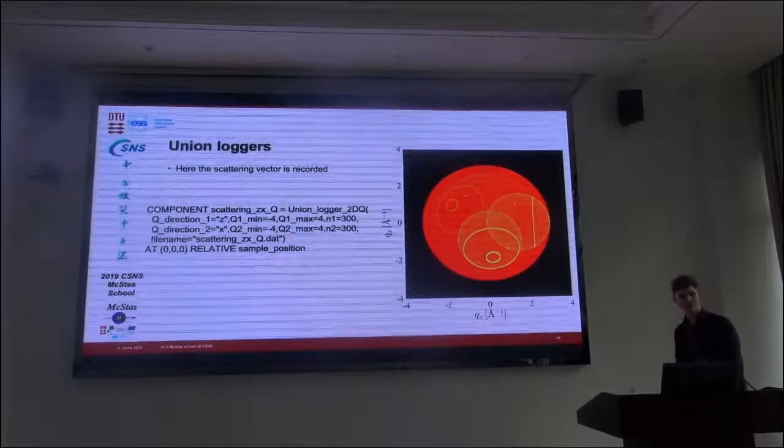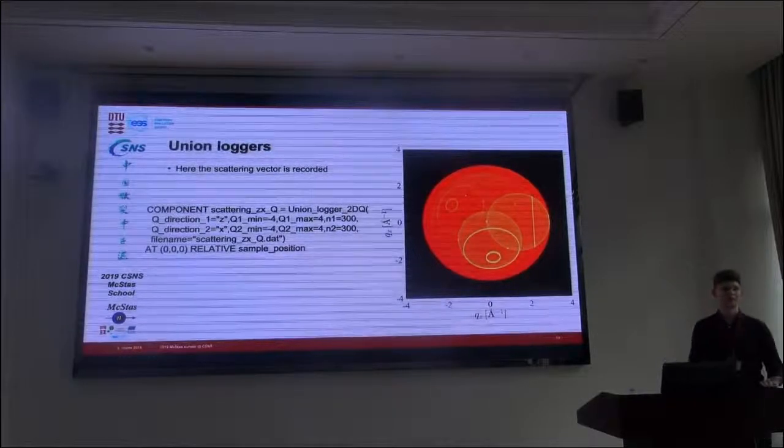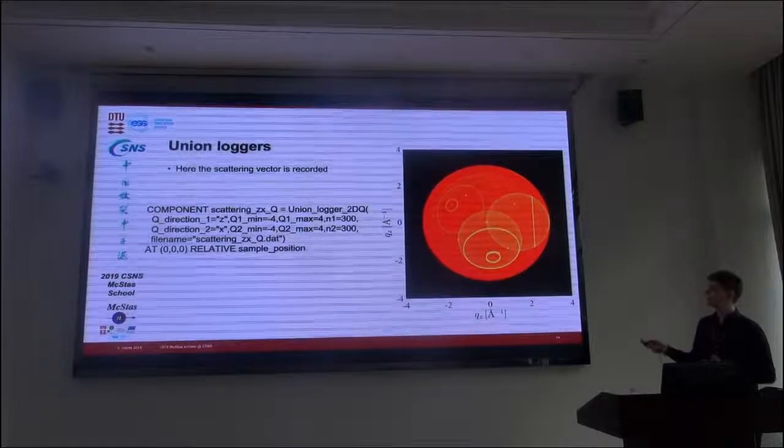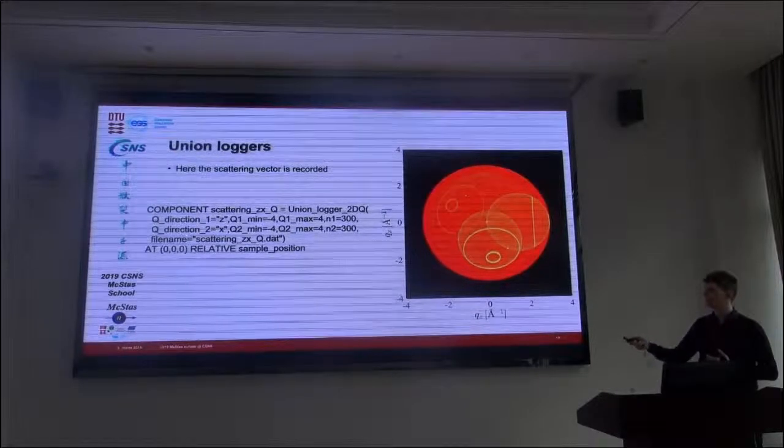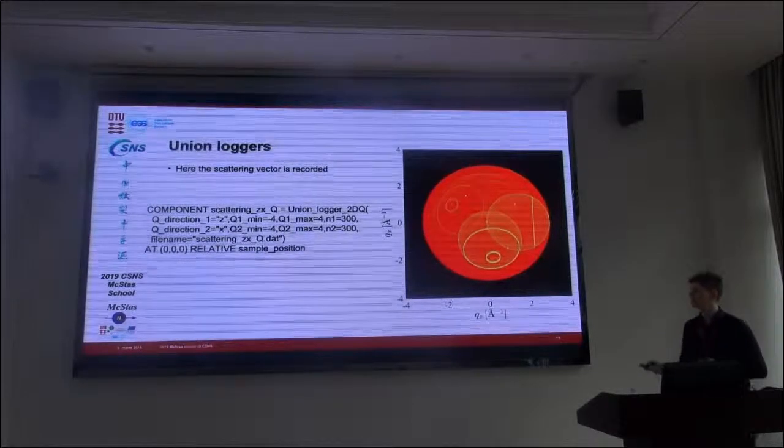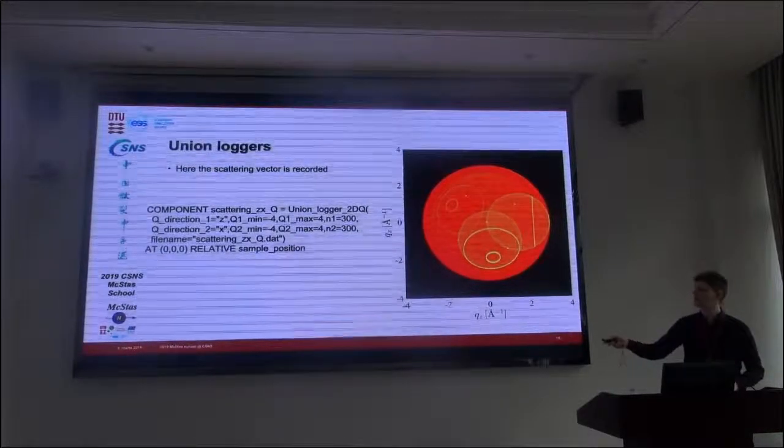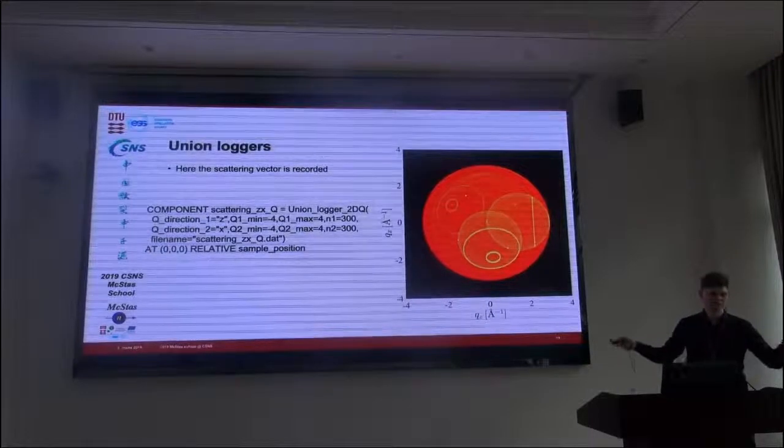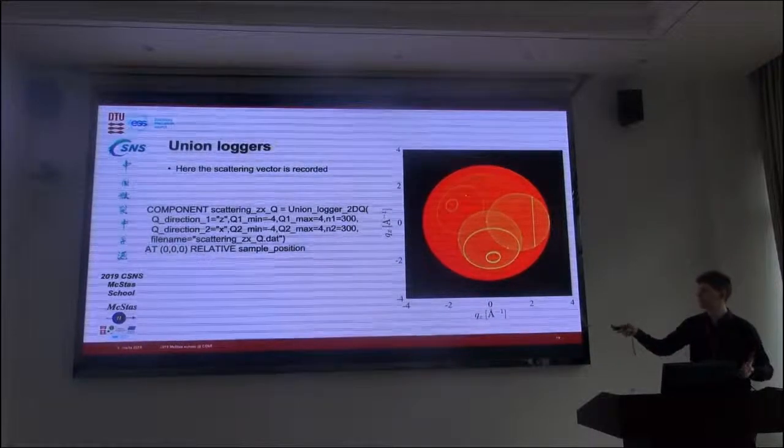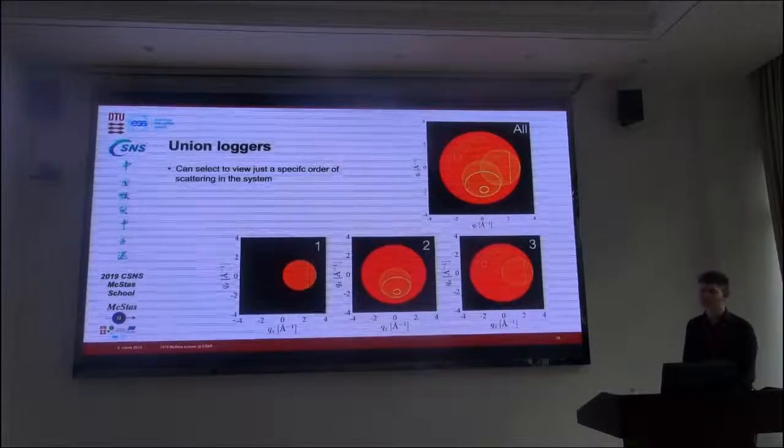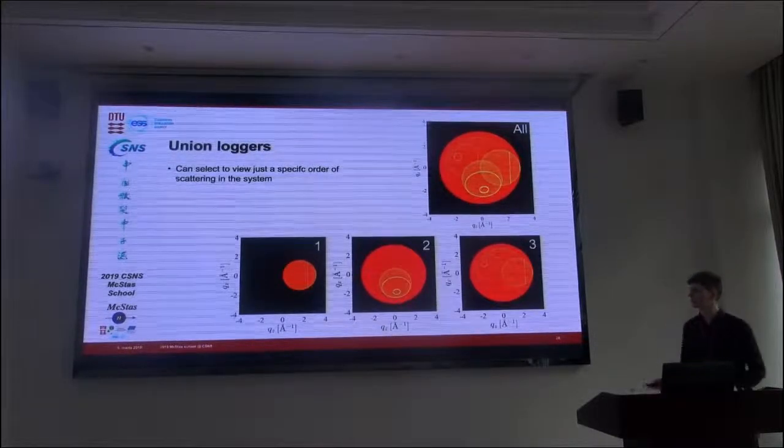But we also want to understand what goes on in reciprocal space. And that looks really weird. But the component is very similar. Now we want to look at 2D Q and scattering vector. And we see Q direction instead of D direction. But very similar syntax.